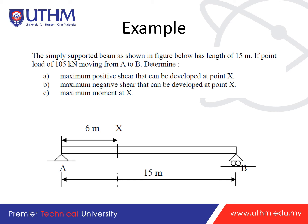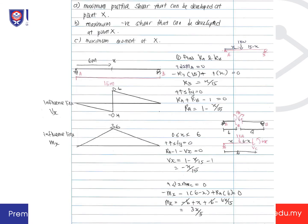Example: a simply supported beam of 15 meters with a point load of 105 kilonewtons moving from A to B. Calculate the maximum positive shear, maximum negative shear, and maximum moment at point X located 6 meters from A. Apply 1 kilonewton, generate the influence line for shear V and moment M, then multiply by 105 to get the actual values.